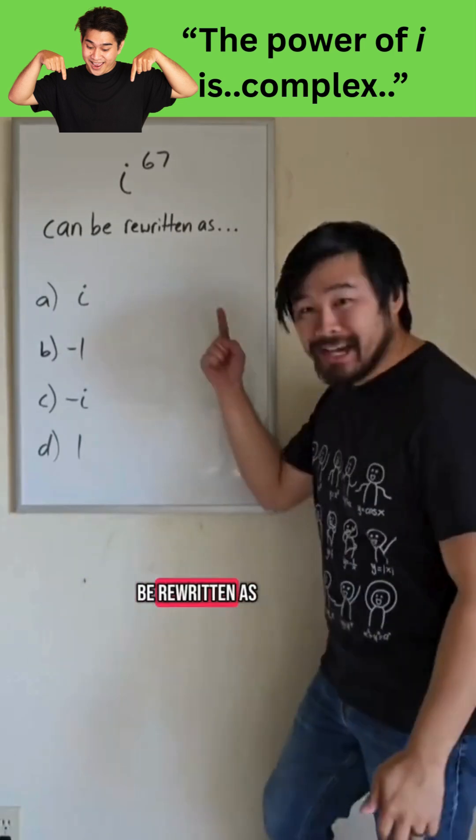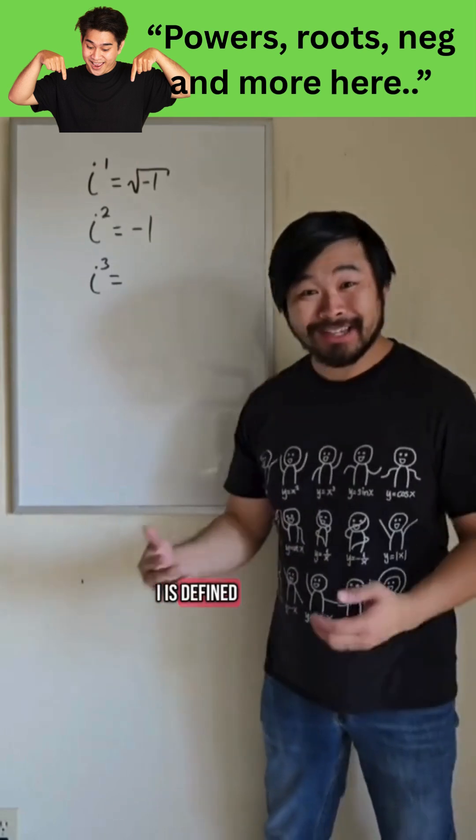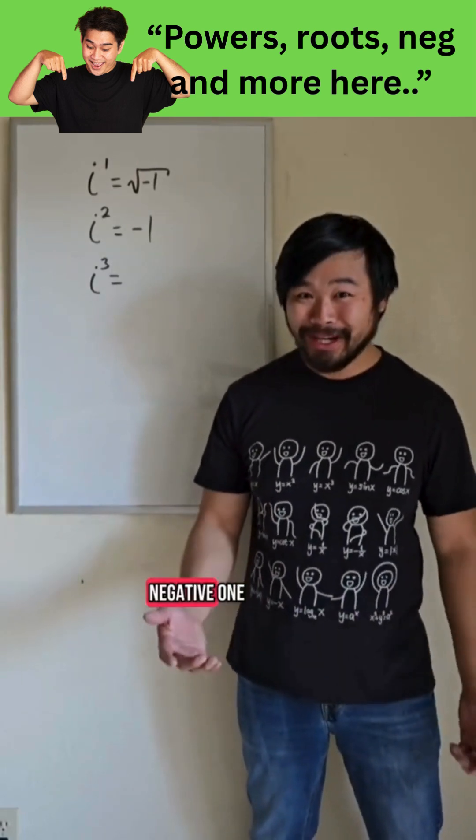i to the 67th can be rewritten as which of these? Let's find out. i is defined as the square root of negative 1, and i squared is negative 1.